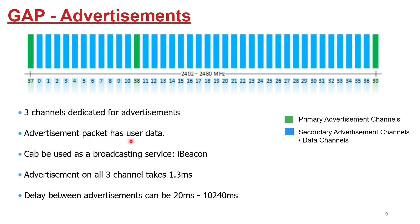Advertisement packets carry user data and can be used as a broadcasting service — for example, in the case of iBeacon, used for iPhones. Advertising on all three primary channels takes approximately 1.3 milliseconds, and the delay between advertisements can range from 20 milliseconds to 10–40 milliseconds. I will show in a later tutorial how to manipulate these advertisement timings and channel settings in the application code.